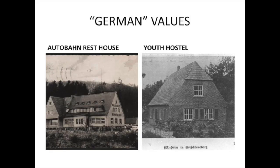Another type of design funded by the Nazi party was buildings along travel roads — Autobahn rest houses and youth hostels that reflected traditional German values — and also served troops and young people as they moved to viewing sites like Zeppelin field, where they could stay in residences that reflected German values.